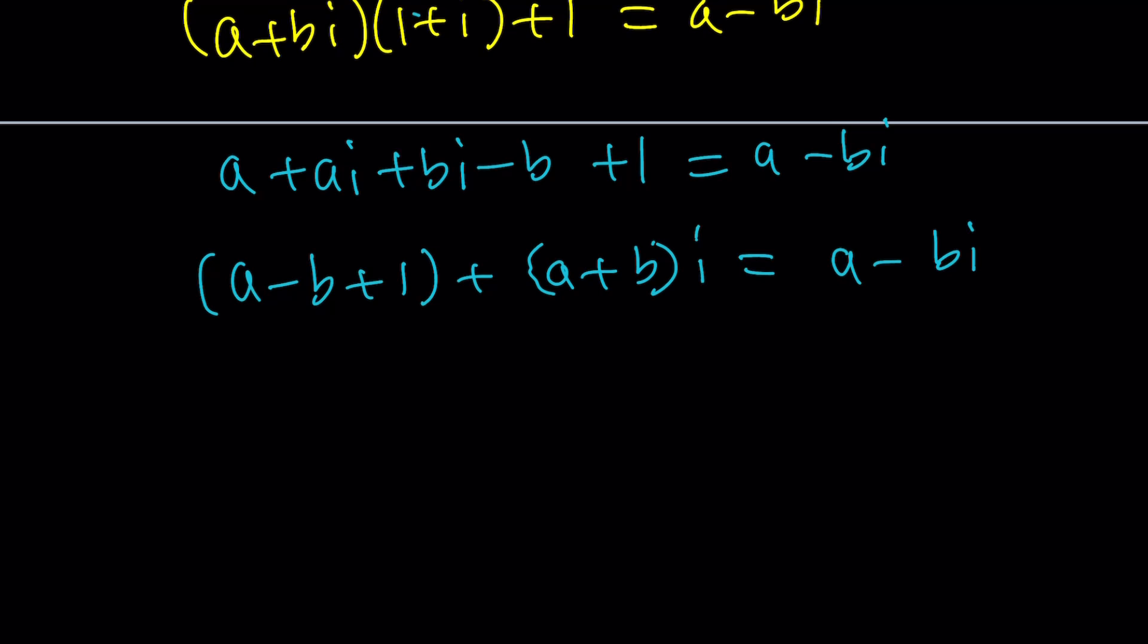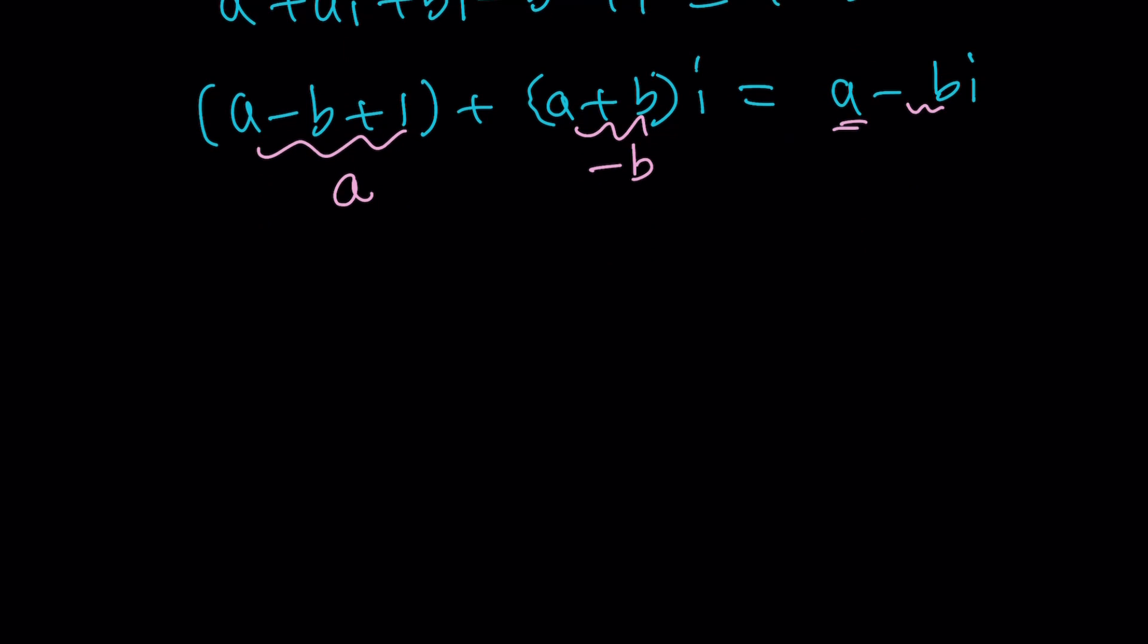Now, here's what we get. This is the real part. That's the real part. So this is equal to a. This is the real part. That's the imaginary part is the imaginary part. So this is equal to negative b. This gives us two equations. Awesome.